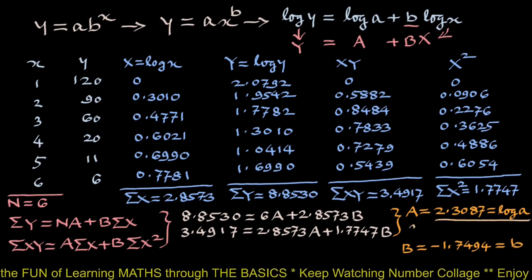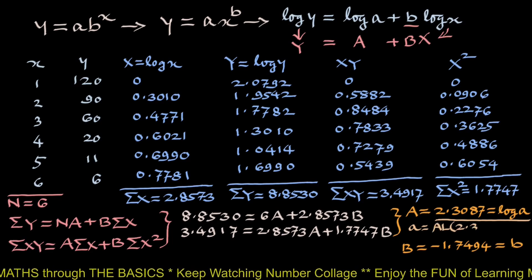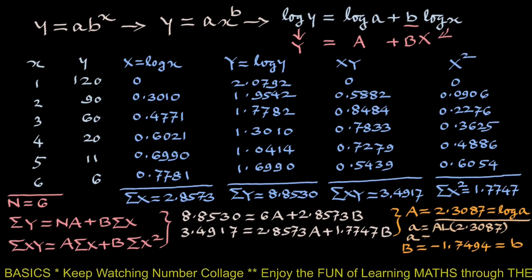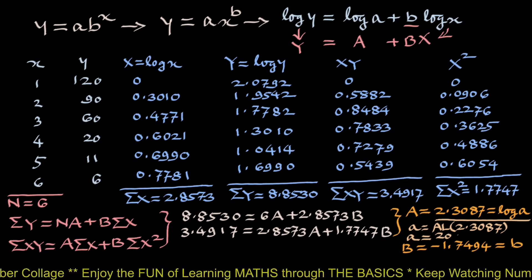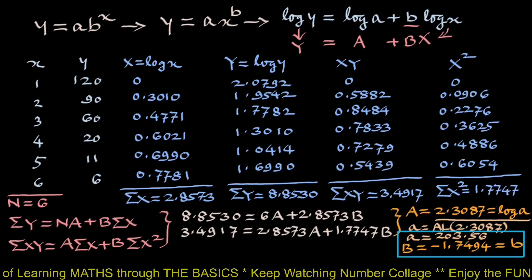From this we get small a equals antilog of 2.3087. So, a equals 203.56. Now, from the values of a and b, curve of the best fit of the form y equals a x raised to b will be